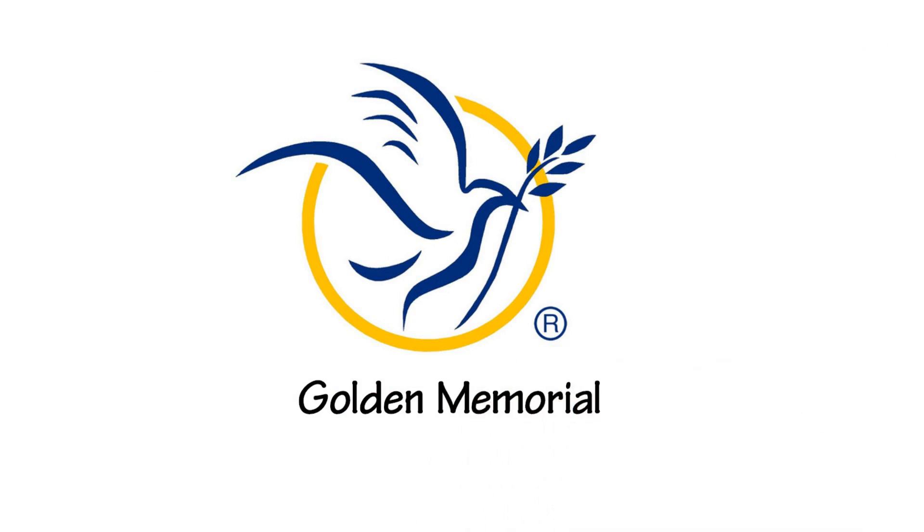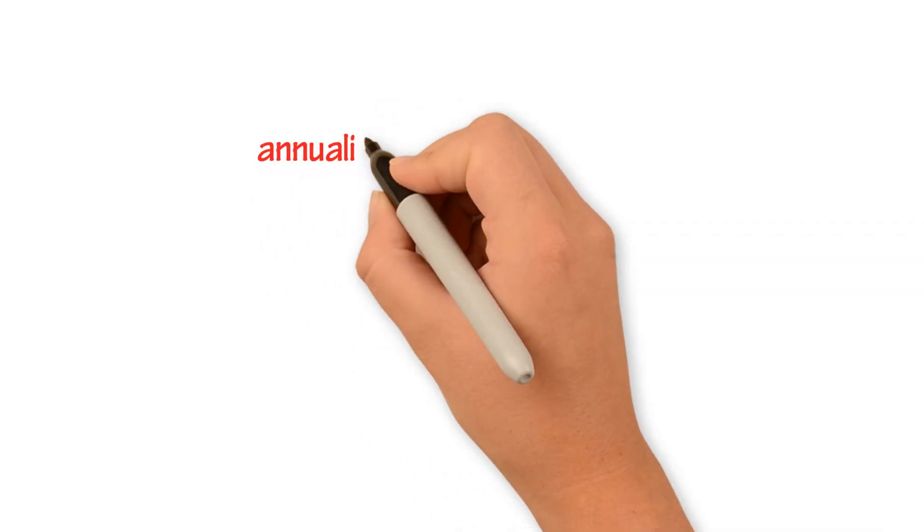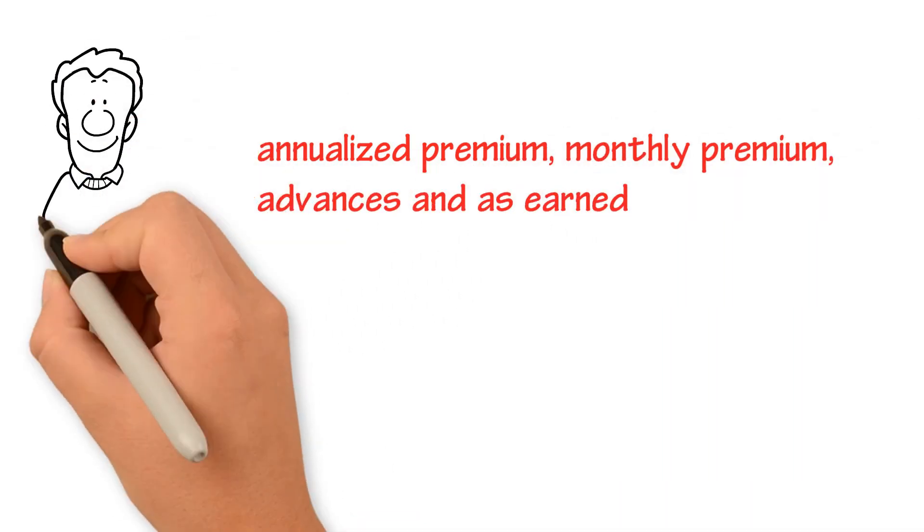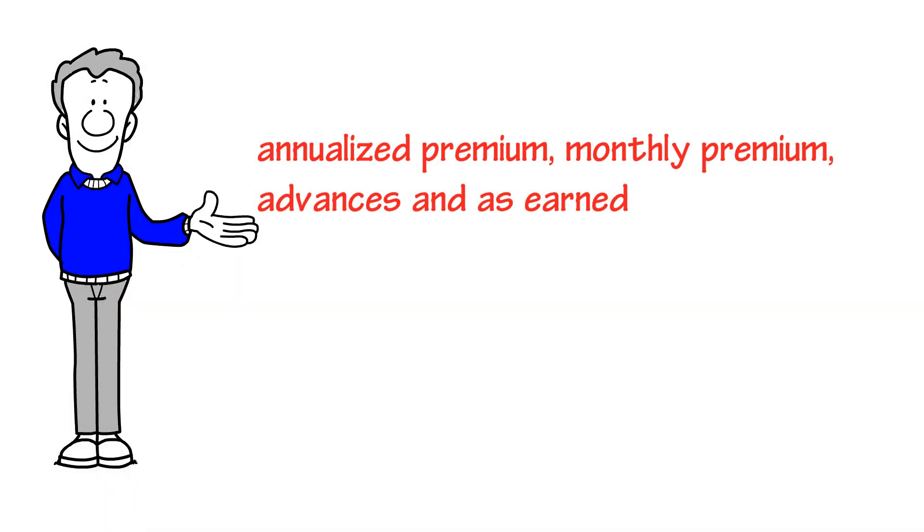Let's get you familiar with the type of words we use first. Words like annualized premium, monthly premium, advances, and as-earned. Look out for these words as we go through this.